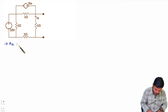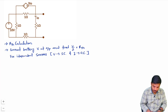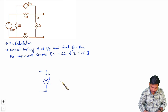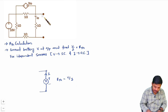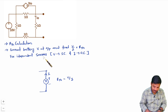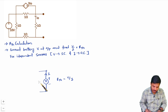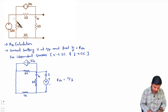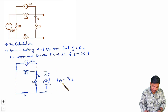For the equivalent Thevenin's resistance with a dependent source, you apply a battery of voltage V at the output terminal, which generates a current I, and RTH equals V/I. Any independent voltage sources are replaced by short circuits and independent current sources are replaced by open circuits. The 10-volt battery is independent, so it is short-circuited, which also short-circuits the 1-ohm resistor. Let me redraw the circuit.